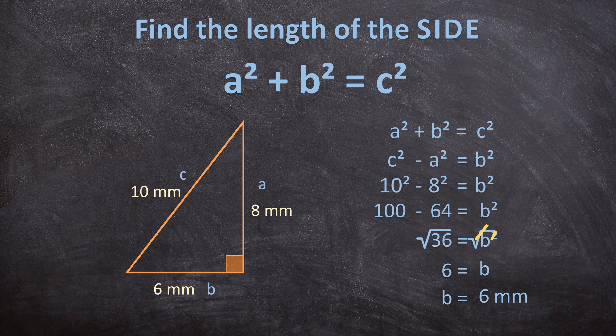B is 6 millimetres. But when we calculate the length of a side, it doesn't always work out as a whole number — sometimes it ends up as a decimal.